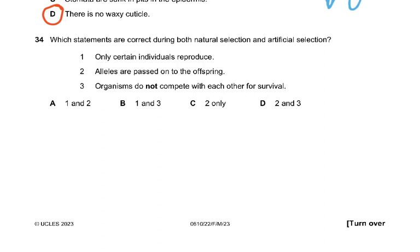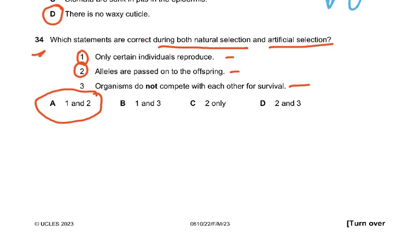Question 34: Which statements are correct during both natural selection and artificial selection? In natural selection there is variation, a change in environment, and better-adapted organisms pass on their alleles to offspring. In artificial selection, humans select certain individuals to reproduce for human benefit. Statements 1 and 2 are correct; statement 3 — that organisms do not compete for survival — is not correct for natural selection. The answer to question 34 is A.